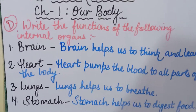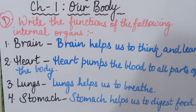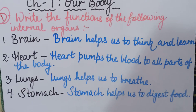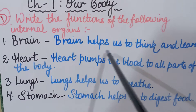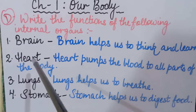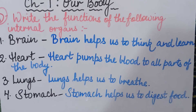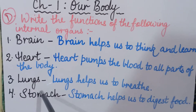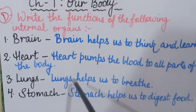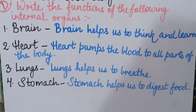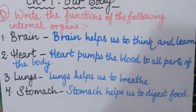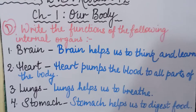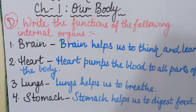To recap all internal organs and their functions: first, brain is inside our head and its function is to help us think and learn. Second, heart is inside our body and it pumps blood to all parts of the body. Third, lungs help us to breathe. Fourth, stomach digests the food we eat. With this, we complete our revision part of chapter 1 — Our Body.